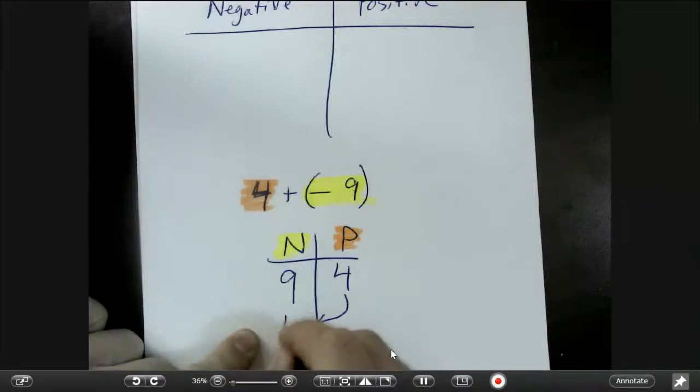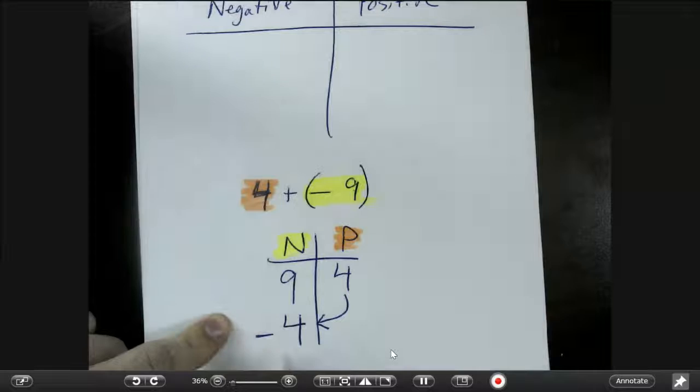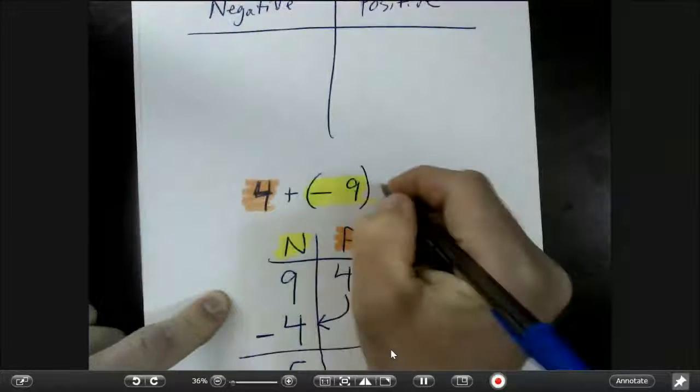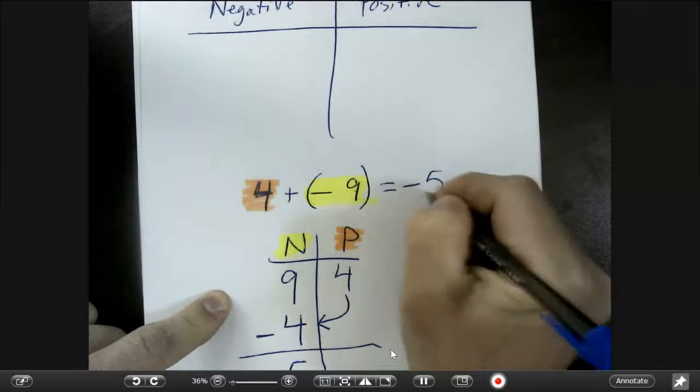And when they cross over, you subtract. So 9 take away 4 is 5, and we are on the negative side. So the answer is going to be negative 5.